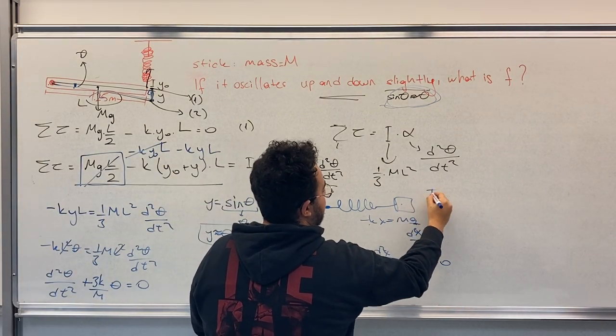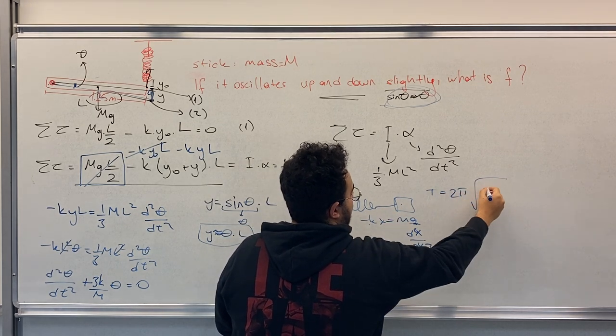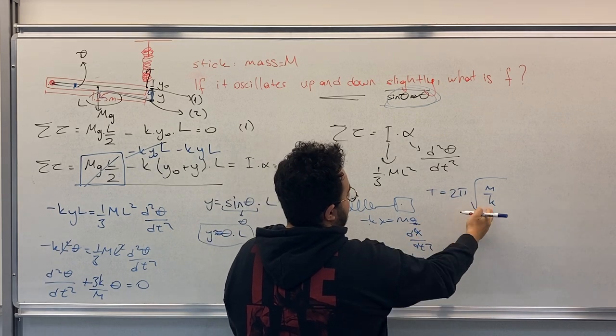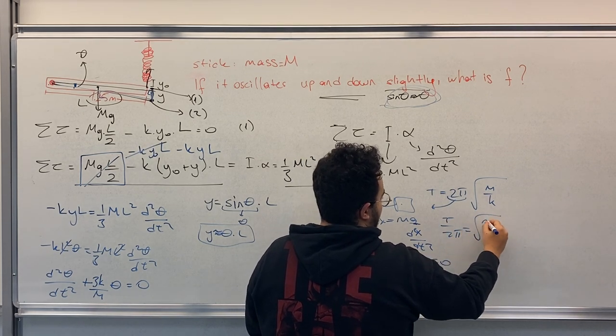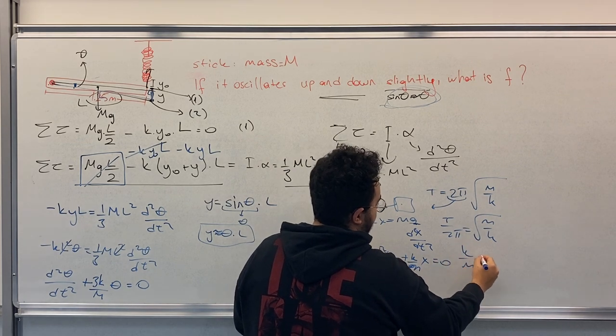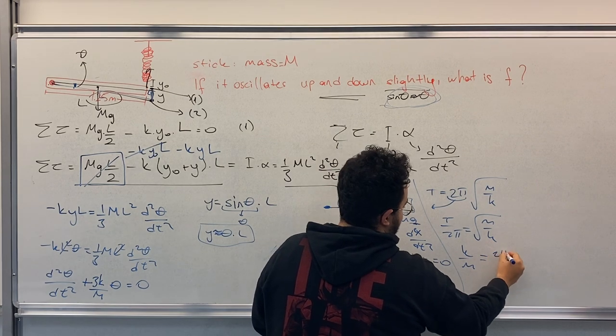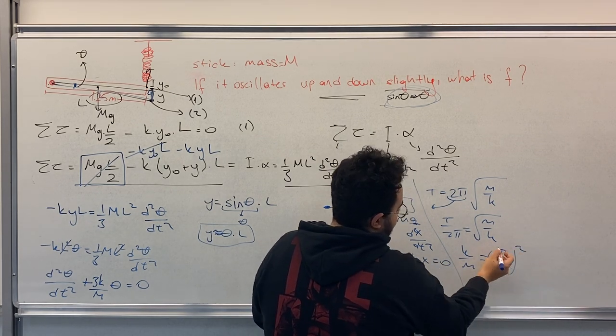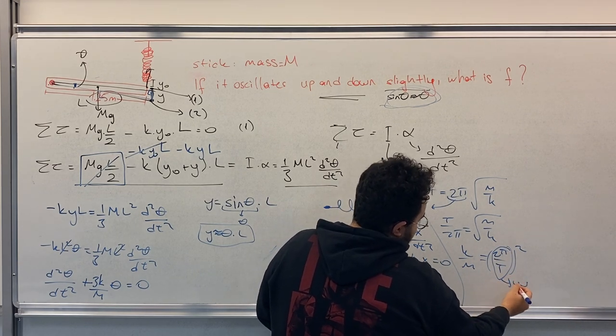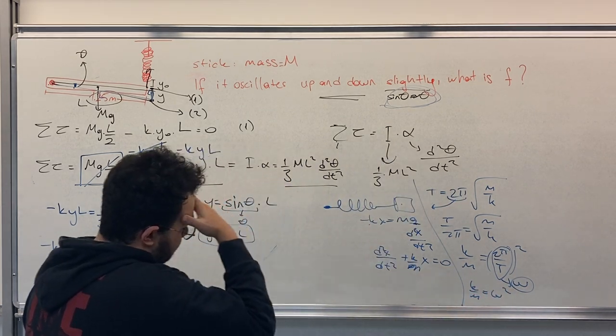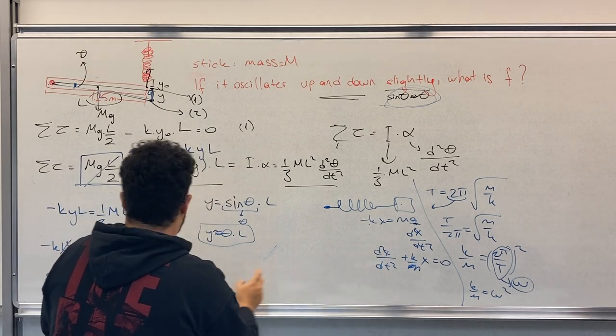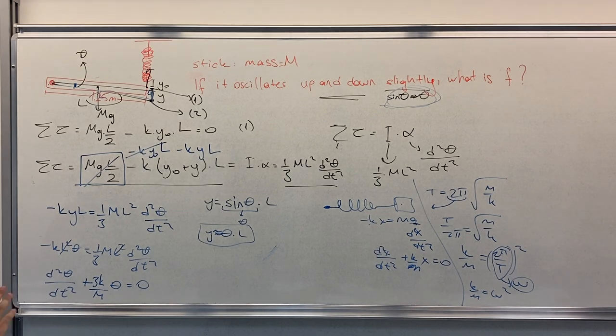If you remember, the period T equals 2 pi square root m over k. If you rearrange this, T over 2 pi equals square root m over k, and k over m equals 2 pi over T squared. Pay attention, this part is actually angular speed omega, so k over m equals omega squared. Now, I know that this is x and this is theta, but that's how I keep in mind all the equations. You can use this derivation as well.